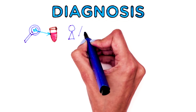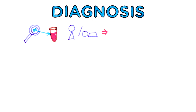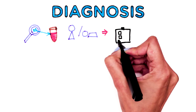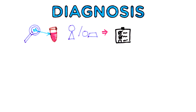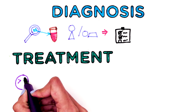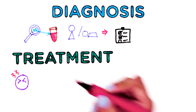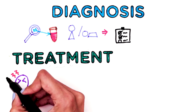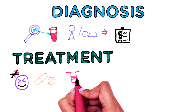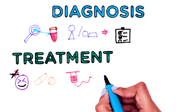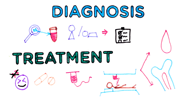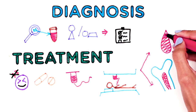A blood test can check for the defective form of hemoglobin that underlies sickle cell anemia. If you or your child has sickle cell anemia, your doctor might suggest additional screening tests to check for further complications of the disease. Treatment is usually aimed at avoiding pain episodes, relieving symptoms, and preventing further complications. The treatments might include medications and blood transfusions. Currently, a blood and bone marrow transplant is the only cure for some patients who have sickle cell disease.